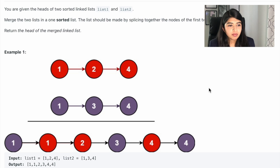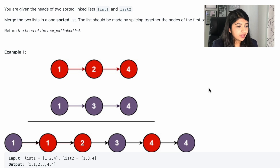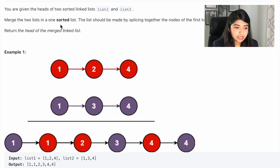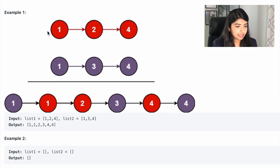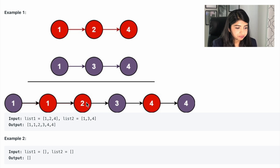Now let's dive into today's problem: Merge Two Sorted Lists. You are given the heads of two sorted linked lists, list one and list two. Merge the two lists into one sorted list, and the list should be made by splicing together the nodes of the first two lists. Return the head of the merged linked list. As you can see, we have to use these existing nodes from the two lists and create one sorted list, returning the pointer to the head node.